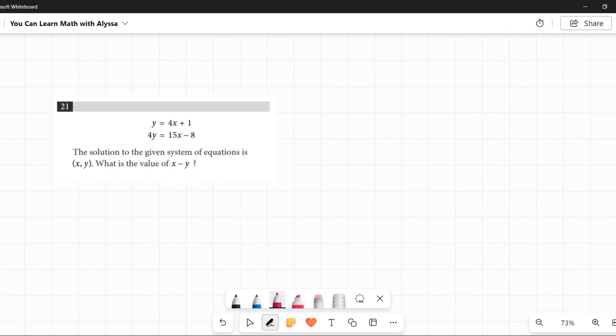y equals 4x plus 1 and 4y equals 15x minus 8. The solution to the given system of equations is x and y. What is the value of x minus y?